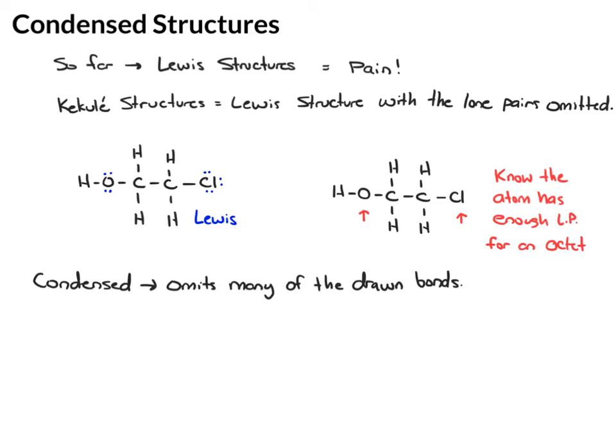We're basically writing our structure from left to right in the order in which the atoms are bonded. If we take this Lewis structure and write it left to right, first we have the HO group, next a CH2, then another CH2, and then a Cl.